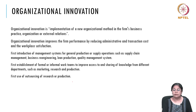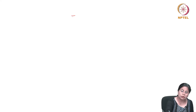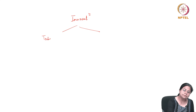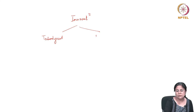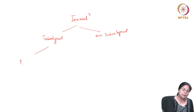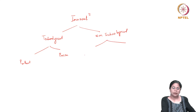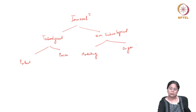Other examples include the establishment of formal or informal work teams to share knowledge across different departments and conduct R&D, and the first use of outsourcing of research or production. Broadly, innovation can be understood as either technological or non-technological. Within technological innovation, we place product innovation and process innovation. Within non-technological innovation, we place marketing and organizational innovation.